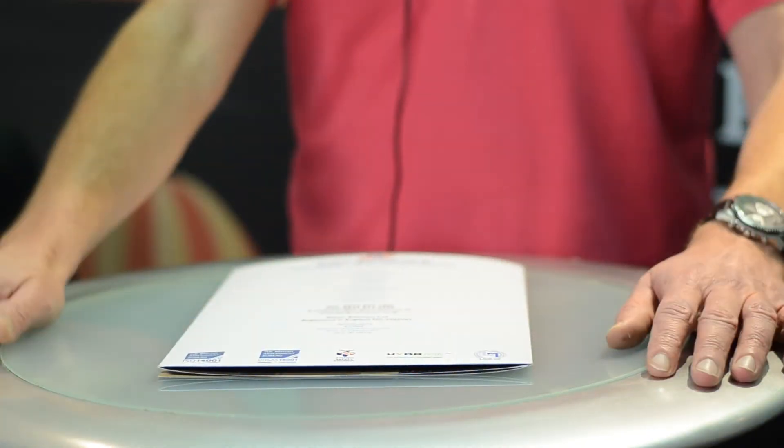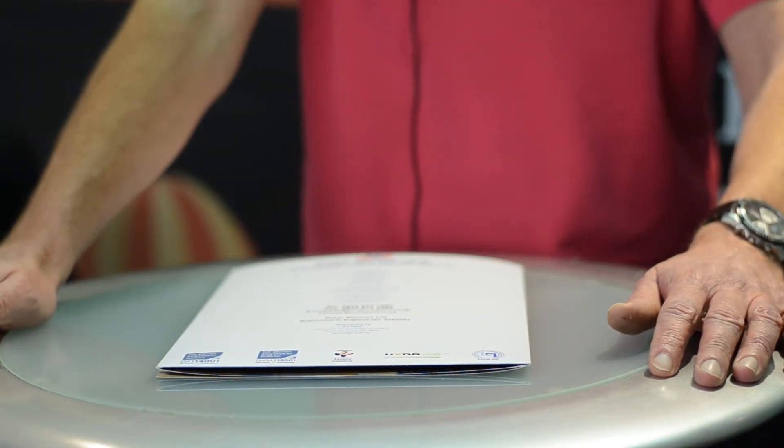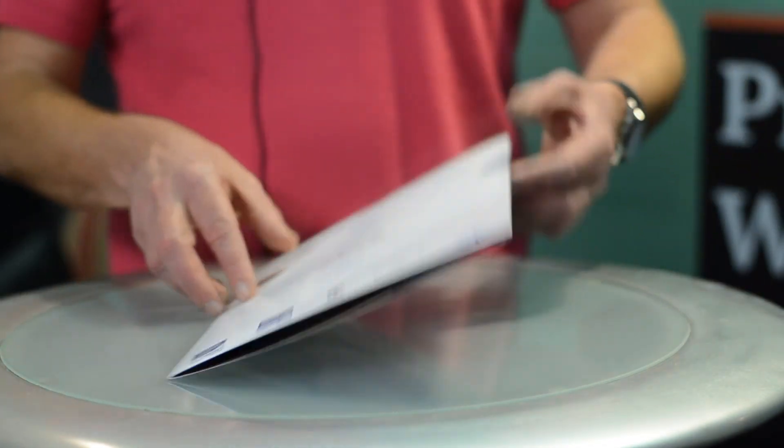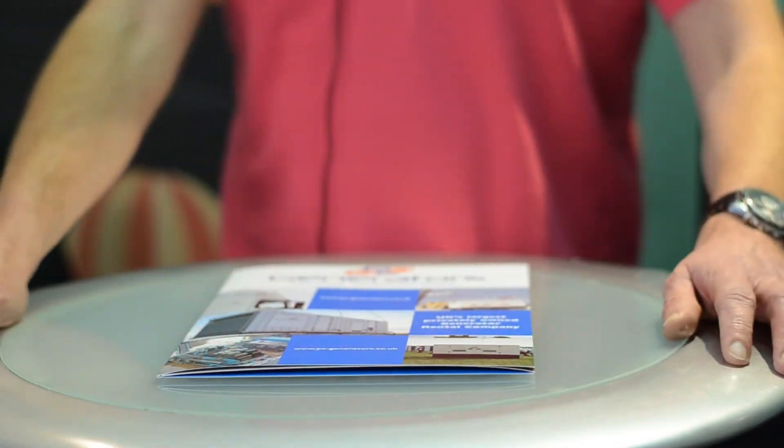The material we print this job on is a 400 GSM silk or gloss with an overall sealant or aqueous varnish.